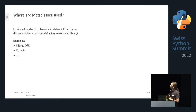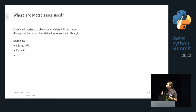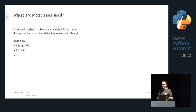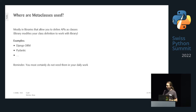Metaclasses are mostly used in libraries where APIs are defined as classes. In Pydantic you define a `BaseModel` with typed class variables; in Django ORM you define database tables as classes. The library uses the metaclass to understand what you've defined, get an overview of all classes, and modify them — for example, adding `save()`, `load()`, and `filter()` methods. That's the best use case for metaclasses.